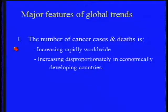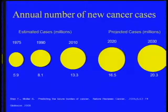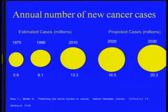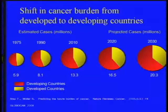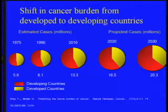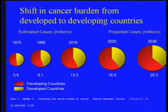The first and most obvious global trend is that the number of cancer cases and deaths is increasing very rapidly worldwide, and it's increasing disproportionately in economically developing countries. By 2030, the number of expected cancer cases will be more than three times what it was in 1975, and about twice what it is in 2010. About two-thirds of all cancer cases will be in low and medium-resource countries.